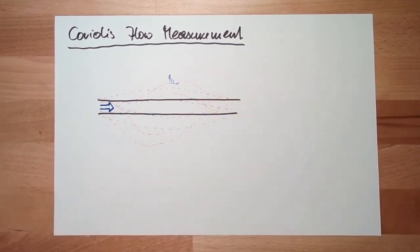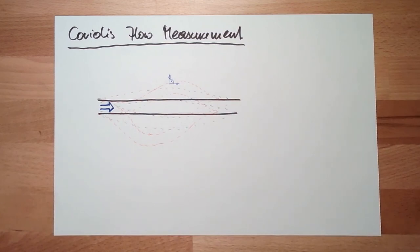So this is Coriolis flow measurement. That's it for flow measurement, that's everything for flow measurement you're going to hear from me. Next time we're talking about pressure measurement. For this time, thank you very much for listening and goodbye.